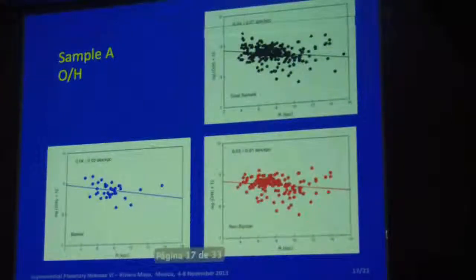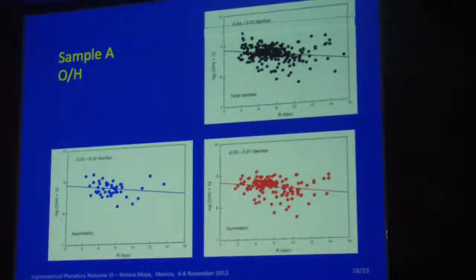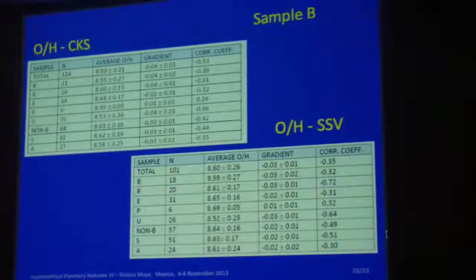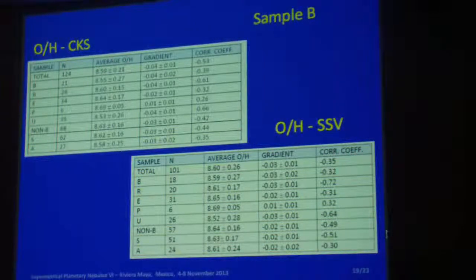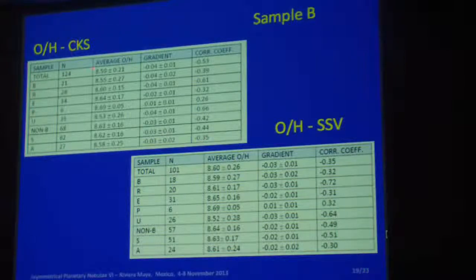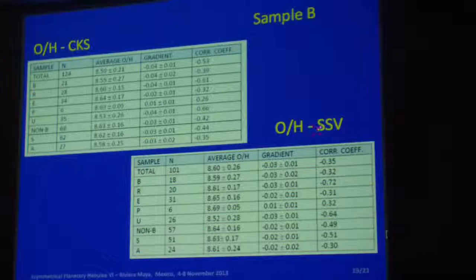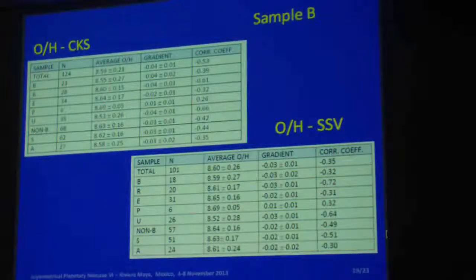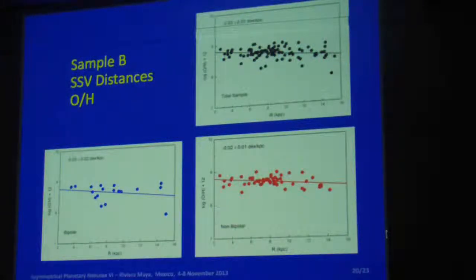If you do that for the other sample, this is just an example. This is the whole sample here. This is just bipolars in this particular case. This is non-bipolar. You see that the gradient is almost the same. This is the same thing, but now it is asymmetric and symmetric. Just another way to see the same result. You see that there's not much variation. If you look at sample B, which is the one by Henry et al., you get essentially the same result. It does not matter if you use the Hipparcos distances or the most recent recalibration by Hipparcos, you get essentially the same results. This is another example using the spectroscopic distances. You see that the gradients are not very different.